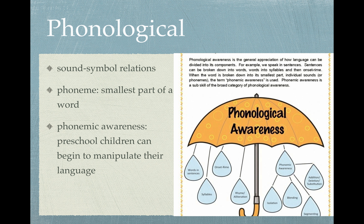For example, a child can say M-O-N and blend those sounds together to get 'moon.' You can also have them segment words — pull apart those small sounds, those phonemes. 'Can you break apart the word moon? What are the three sounds you hear?' A child, typically in preschool going into kindergarten age, should be able to tell us each individual sound.